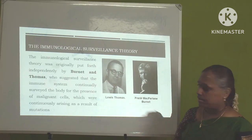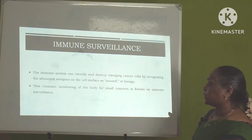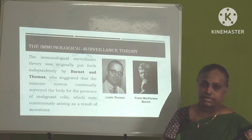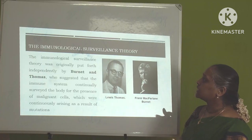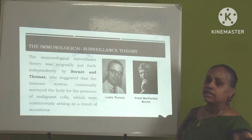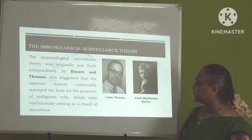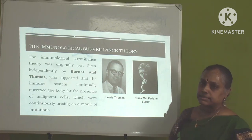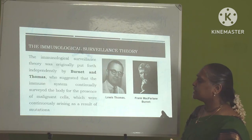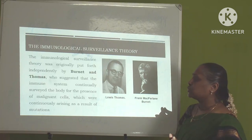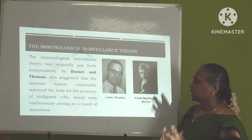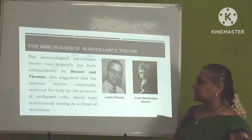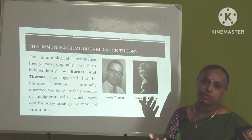This constant monitoring of the body for small tumors is known as immune surveillance. This immunological surveillance theory was proposed independently by two scientists, Lewis Thomas and Frank McFarlane Burnett. They suggested that the immune system continually surveys the body for the presence of malignant cells — that is, tumor cells which were continuously arising as a result of mutation.